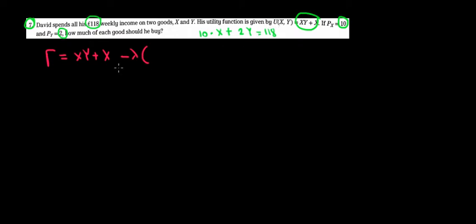Now, let's do it. We write it over here. Let me change colors. So we got 10x plus 2y minus 118. What is the derivative of the Lagrange with respect to x? That should be 0. This one should be 0.